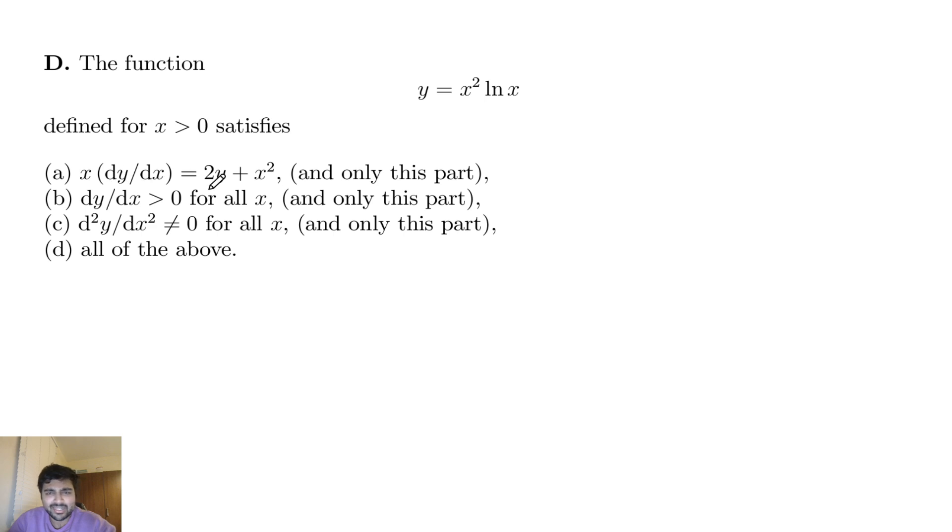So part a, x times dy/dx is 2y plus x squared. b, dy/dx is positive for all x. c, the second derivative doesn't equal 0 for all x, or d, all of the above.